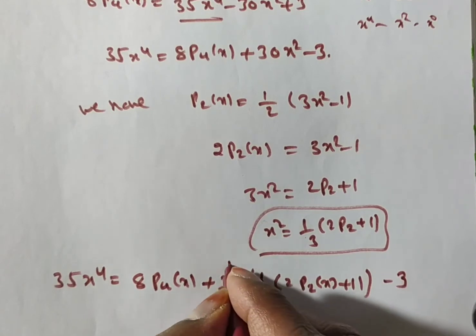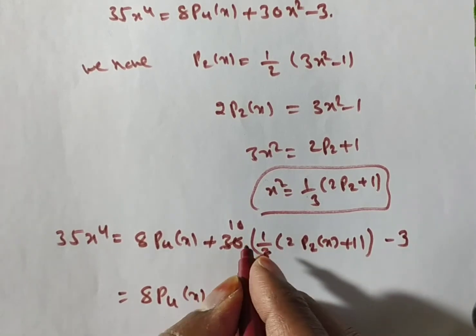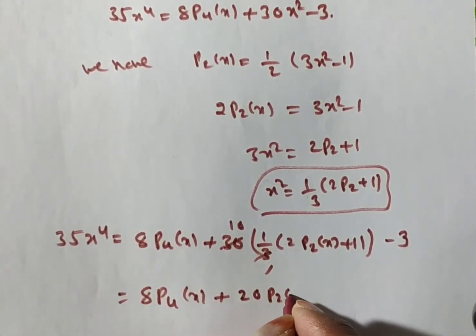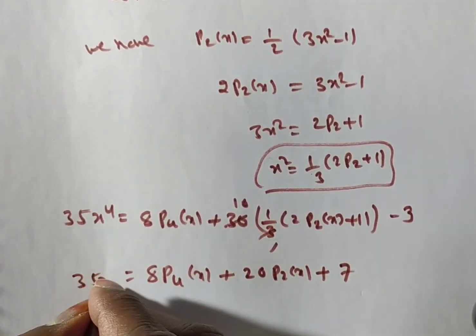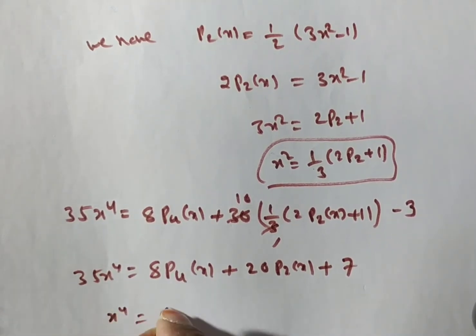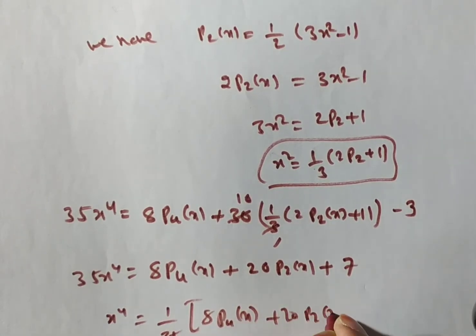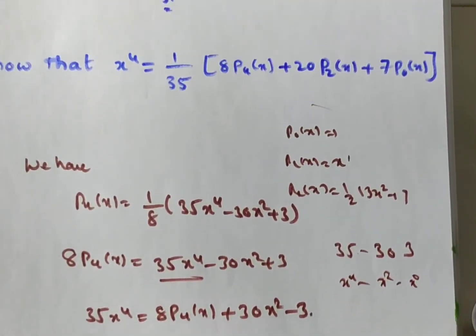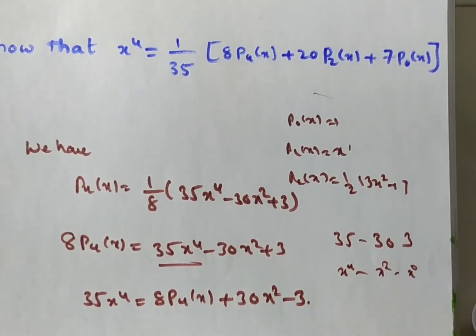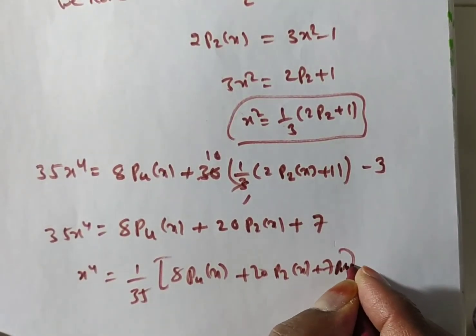Splitting this: 30 times 1/3 is 10, so we get 8·P₄(x) + 10·(2·P₂(x)) + 10 - 3 = 8·P₄(x) + 20·P₂(x) + 7. Therefore x⁴ = 1/35·(8·P₄(x) + 20·P₂(x) + 7). Since P₀(x) = 1, the 7 can be written as 7·P₀(x), giving x⁴ = 1/35·(8·P₄(x) + 20·P₂(x) + 7·P₀(x)). Hence proved.